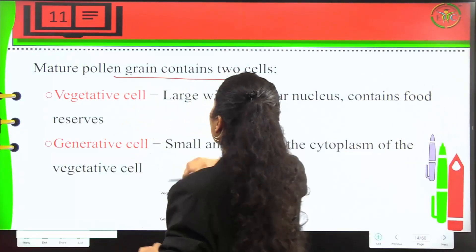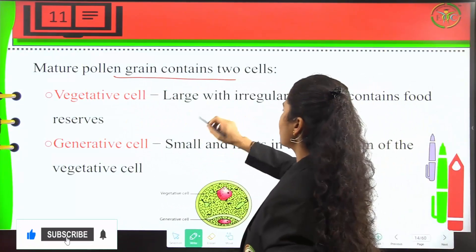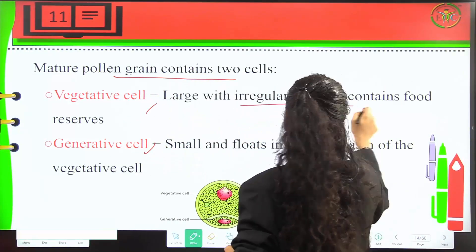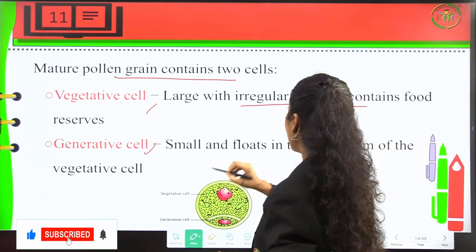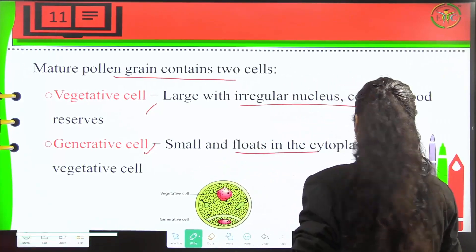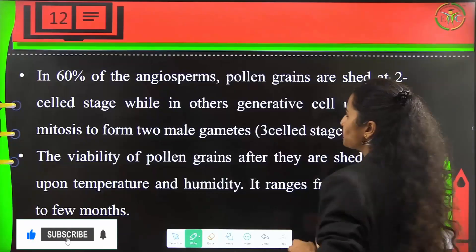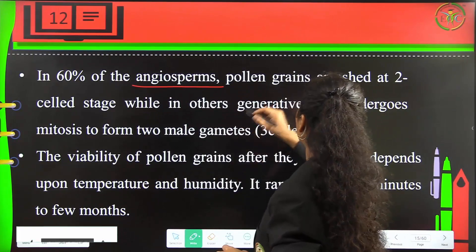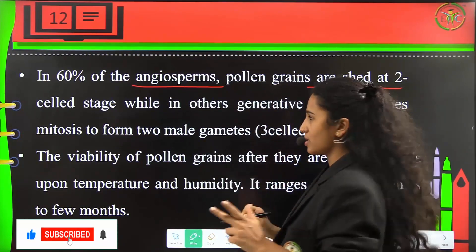A mature pollen grain consists of two cells: a vegetative cell and a generative cell. The vegetative cell is large with an irregular nucleus and contains food reserves. The generative cell is small and floats in the cytoplasm of the vegetative cell. In 60% of angiosperms, pollen grains are shed at the two-cell stage.